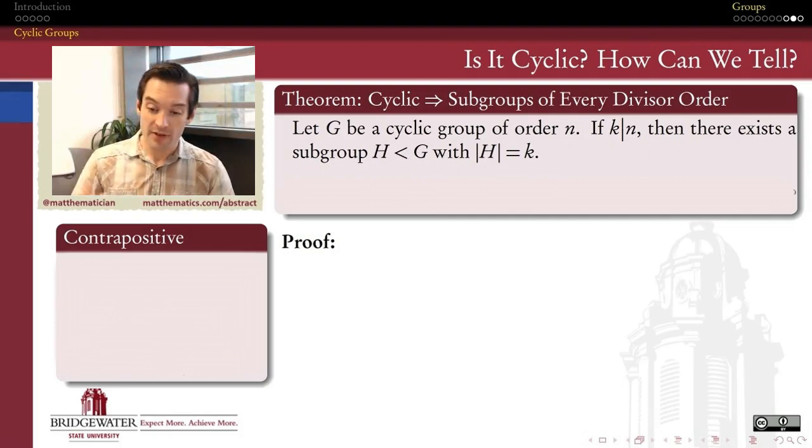For example, if I have a cyclic group of order 20, then there exists a subgroup of that group whose order is 10. There exists a subgroup whose order is 5, a subgroup whose order is 2, a subgroup whose order is 4. This is pretty powerful. It gives us a whole grab bag full of subgroups, potentially. For every divisor of the order of the group, we can find a subgroup that has that divisor as the order of the subgroup.